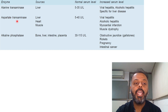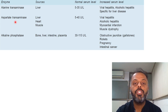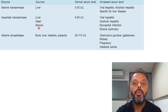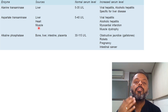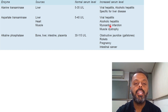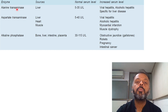The second enzyme is AST, that is Aspartate Transaminase. It also belongs to the transaminases category and is known as SGOT, that is Serum Glutamate Oxaloacetate Transaminase. Sources are liver, heart, and muscle. The normal level is 5 to 40 units per litre. Its level increases in viral hepatitis, alcoholic hepatitis, and myocardial infarction. It is more specific for liver diseases than cardiac diseases, and ALT is more specific than AST for liver diseases.